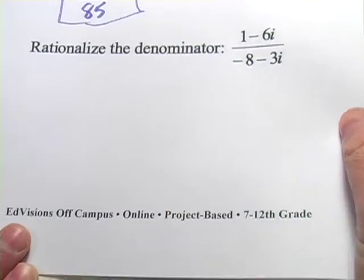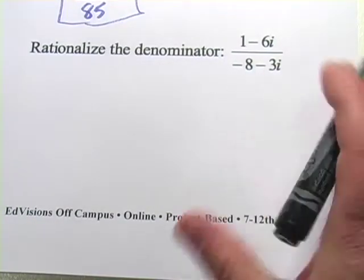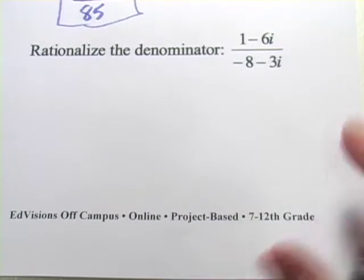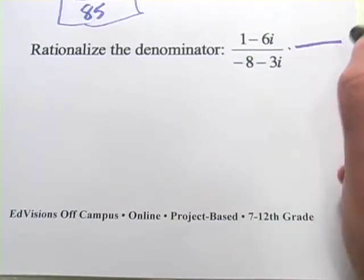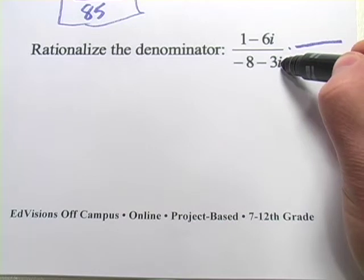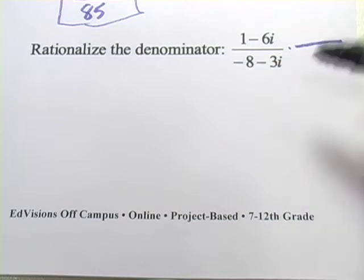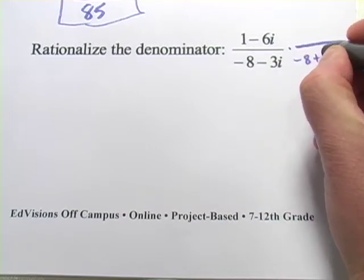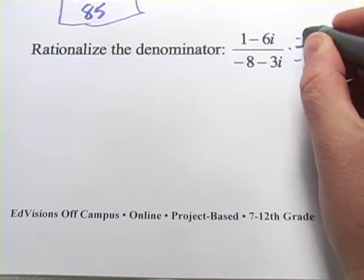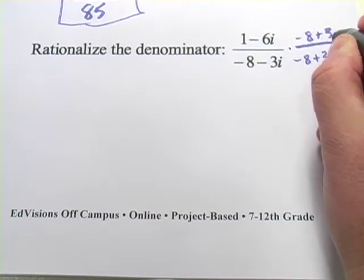Let's try one more of those. Remember, the procedure here is to multiply by the conjugate of the denominator over the conjugate of the denominator. The conjugate of this denominator, we just changed the sign in the middle, is going to be negative 8 plus 3i. So we'll multiply by that on the top too so that we're multiplying by 1.